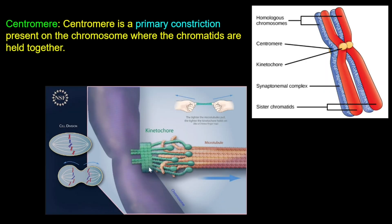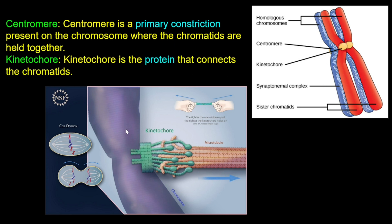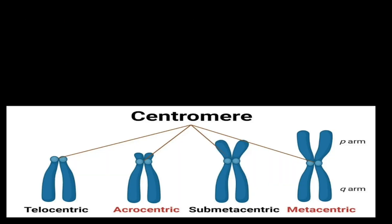The centromere is the primary constriction present on the chromosome where the chromatids are held together. It is bent at the centromere. Kinetochore is the protein that connects the chromatids to the centromere.